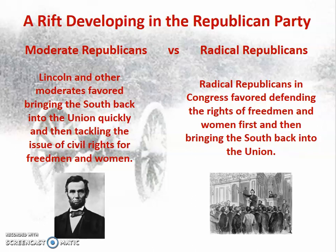For the Radical Republicans who controlled Congress, they favored an inversion of that priority list. They wanted a higher-ranking priority attached to defending the rights of freed men and women, and then tackle getting the southern states back into the Union. They did not want to make this a speedy process. They wanted the southern states to learn from their mistakes and did not want everything to just go back to normal. They wanted a difficult readmission process so that, hopefully, those states would never again get the idea of secession and cause a second civil war.